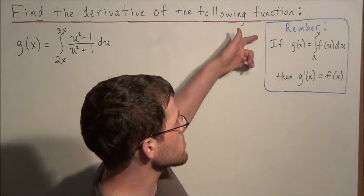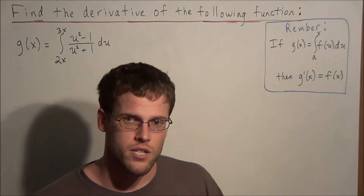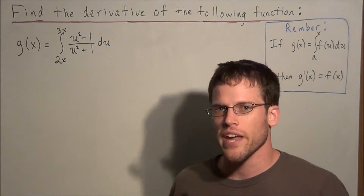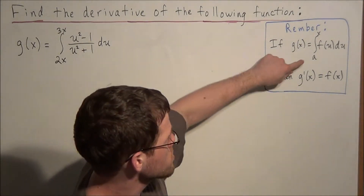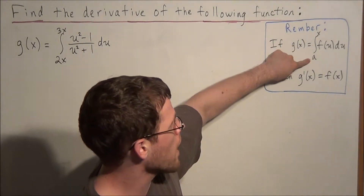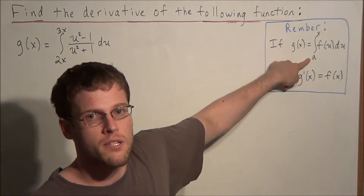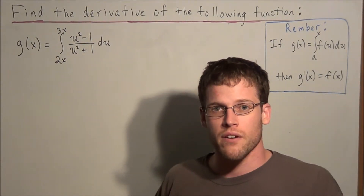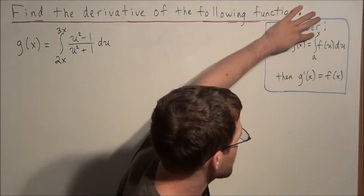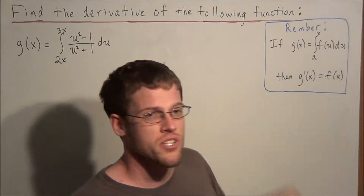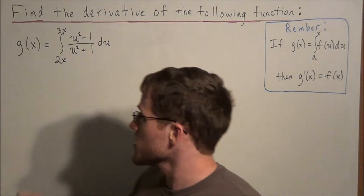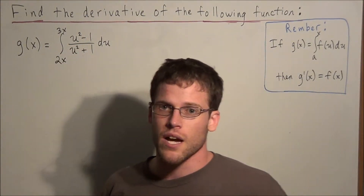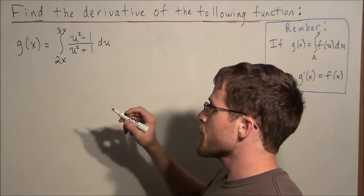The goal is to use the second fundamental theorem of calculus, but what makes this problem challenging is we really have to think about when we are able to use this theorem. Notice that the bottom term in the interval needs to be a constant, but right here we have a variable in our bottom term. Also, we need to have the variable x by itself in the top part, but once again we have a 3x here. So we have two problems that we need to accommodate for.